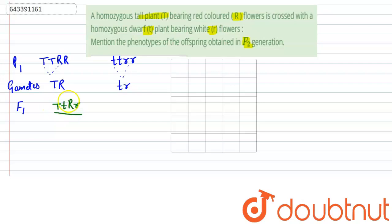So here there is one capital T and one capital R, so these are dominant alleles. The small t, that is the dwarfness, will not be able to express itself because of the presence of this dominant element capital T. Capital T is dominant.